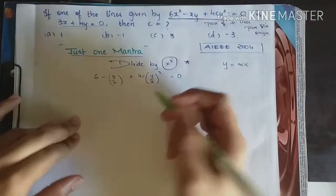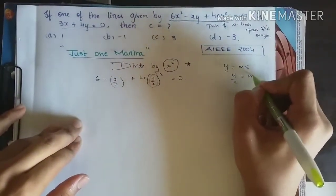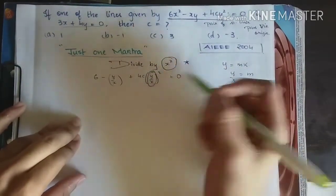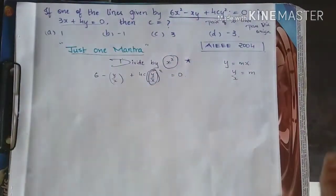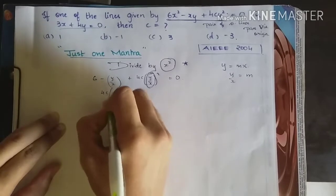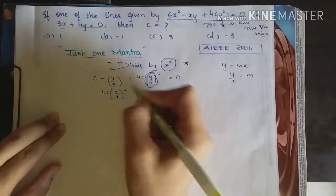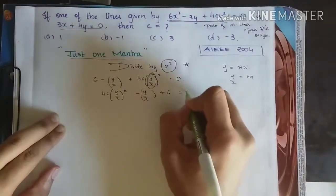And very coincidentally, we are getting y by x here. So y by x equal to m. So this is nothing but slope of the line. If we solve for the quadratic equation, we will get two values and those two are the slopes. So let us proceed. I will just write it in our normal form. 4c into y by x whole square minus of y by x plus 6 equal to 0.